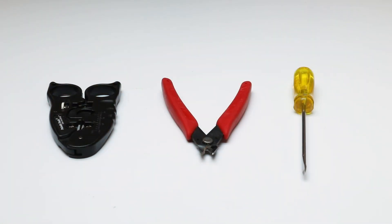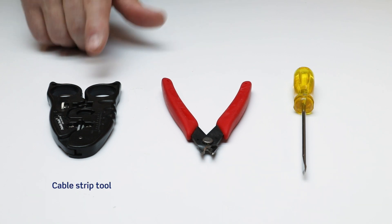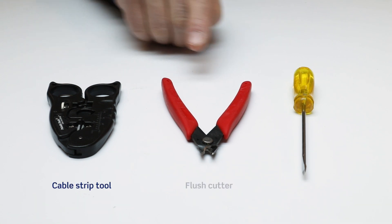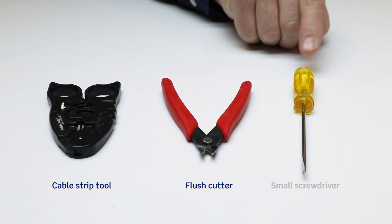No proprietary tools are required to terminate the VXC coupler, just standard hand tools, a cable strip tool, a flush cutter, and a small screwdriver.